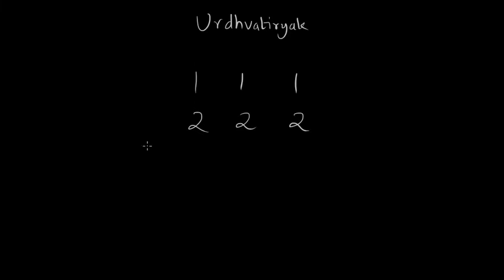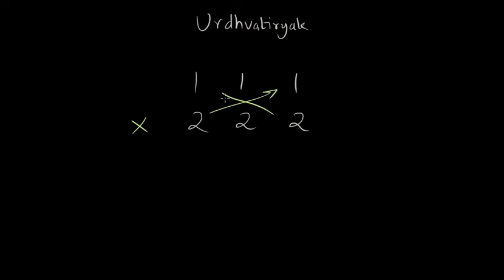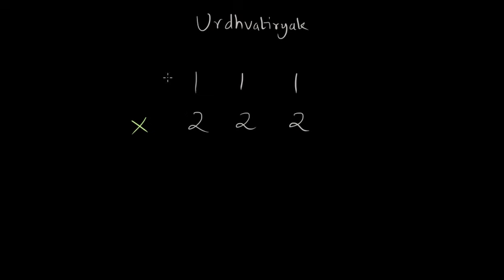In this video we will focus on multiplication of three-digit numbers using the Urdhva Thiryak method. First we perform the vertical multiplication at the rightmost digits. Then we perform cross multiplication on the right hand side. Then we perform Urdhva Thiryak, a mix of cross and vertical multiplication. Then we perform cross multiplication on the left hand side, and finally vertical multiplication on the leftmost digits.